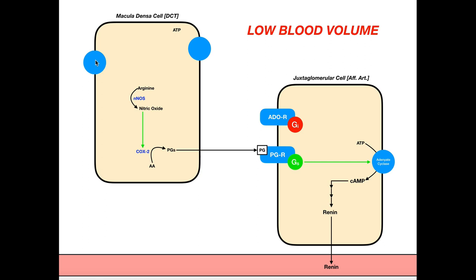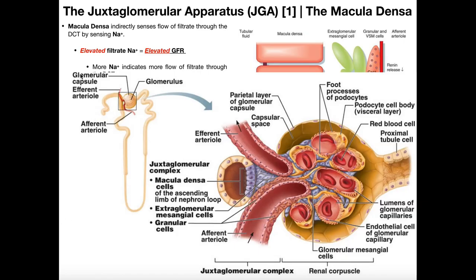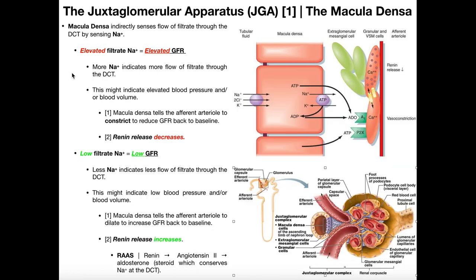As long as there's very little sodium being sensed by the macula densa cells, you're going to get prostaglandin production, leading to cyclic AMP production by the juxtaglomerular cell and subsequent renin release. This is a graded response — the lower the sodium, the more renin release you get. It's inversely proportional to the amount of sodium.